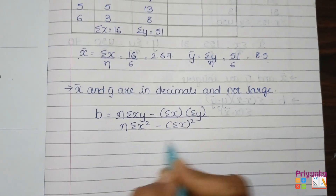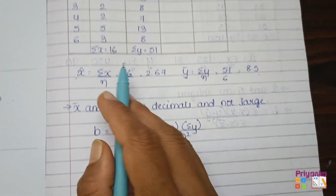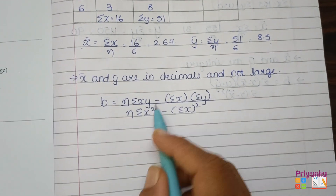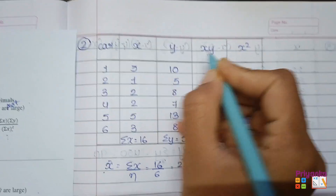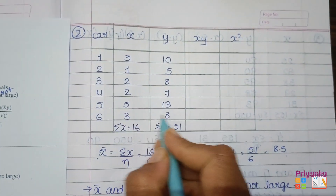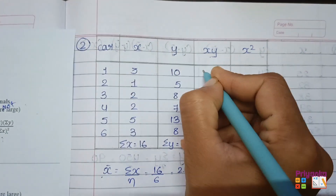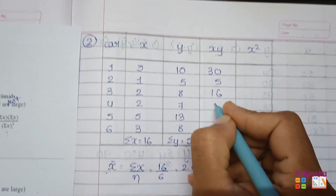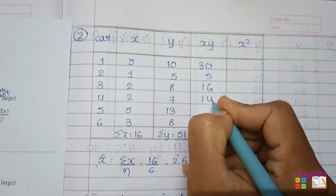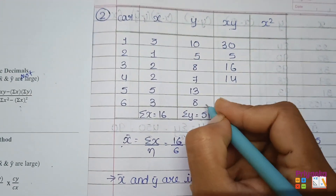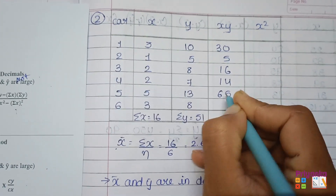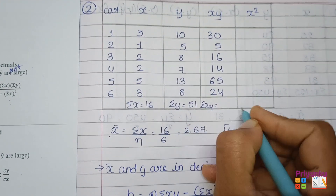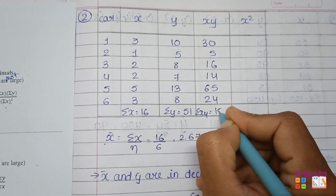First, check what information you exactly need. You have the x column and the y column. The next thing you need is σxy, so multiply these two columns: 3×10=30, 1×5=5, 2×8=16, 2×7=14, 5×13=65, 3×8=24. The total of this column, σxy, is 154.